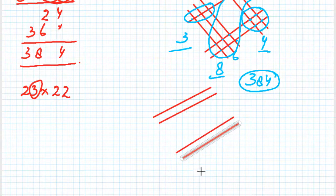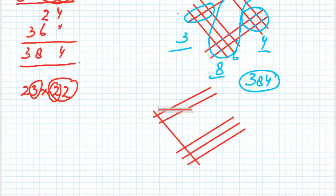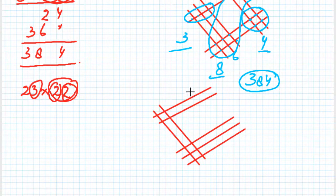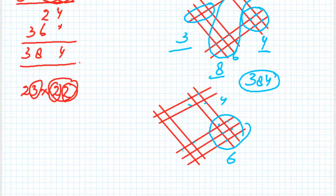Then for the next line of 23. We have the second number 22, so draw two lines in the different direction — one and then second. Similarly there is another 2, so draw two more lines at some distance in the same direction. Now look at the points of intersection: one, two, three, four, five, six — write down 6 here.